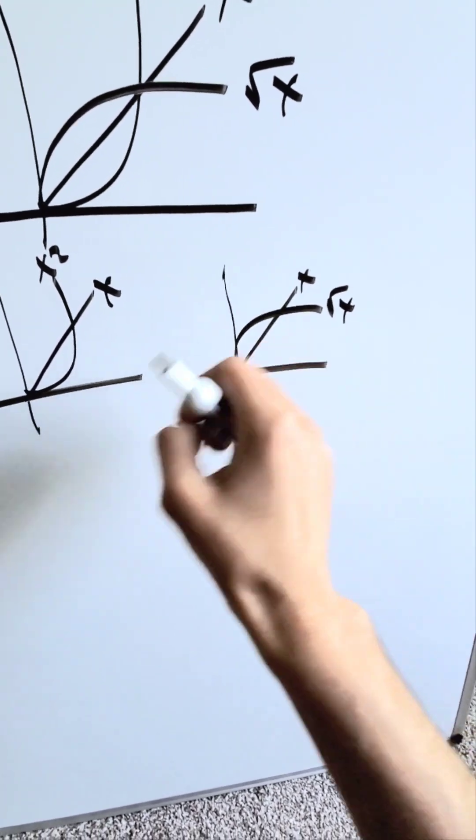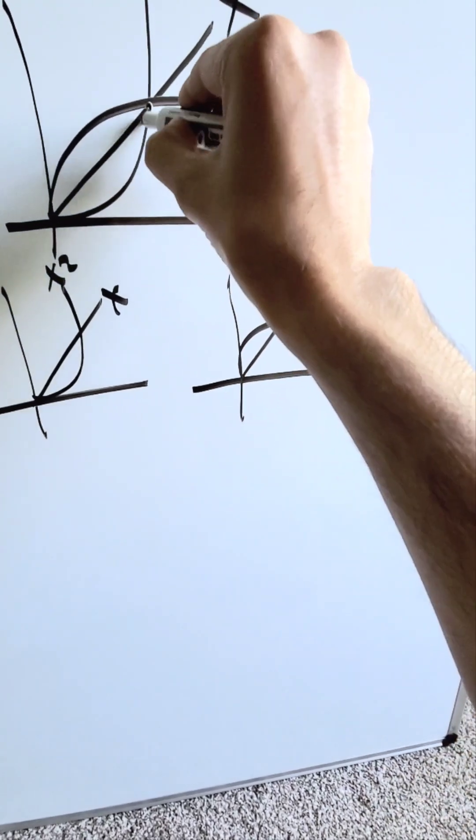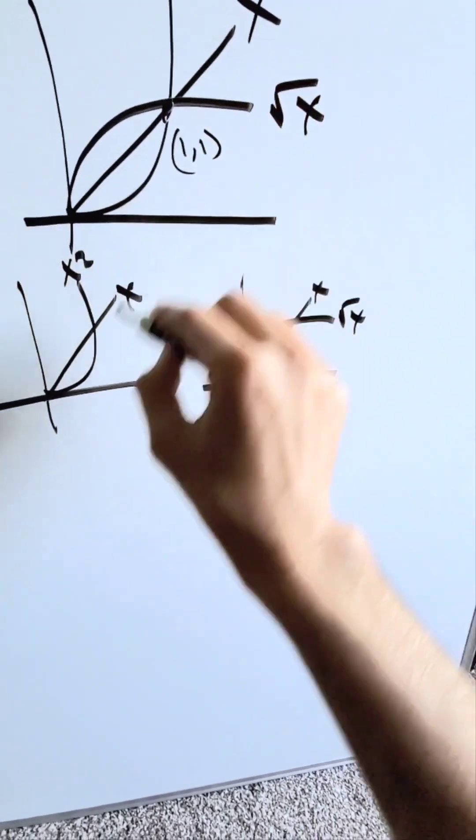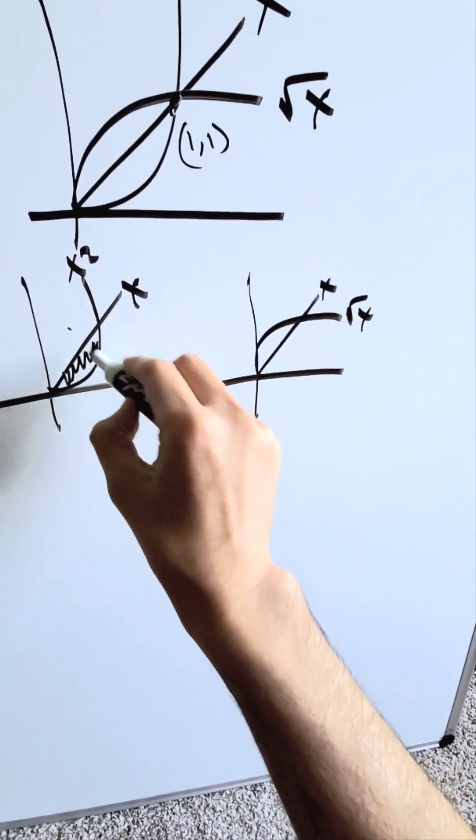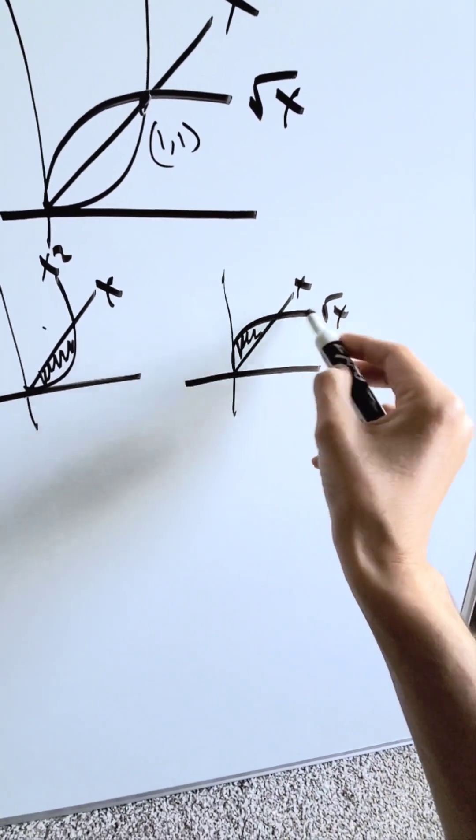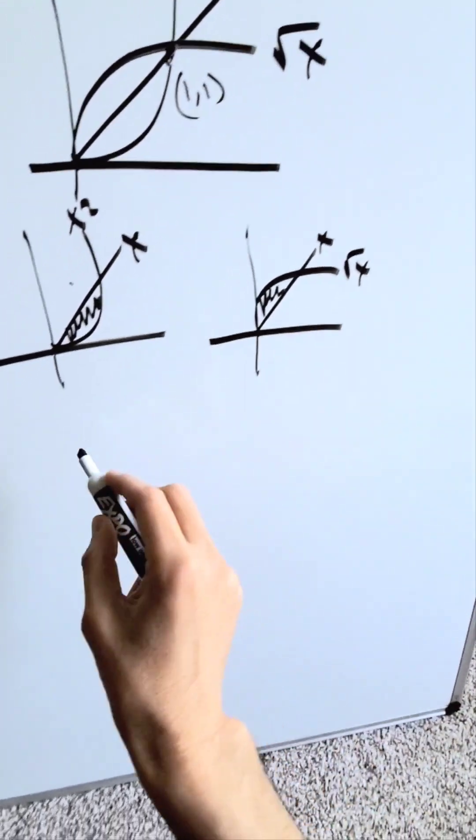Absent any exaggeration in my drawing, this point, the intersection of all three, is always (1, 1). This area between x and x squared and this area between root x and x will be equal to one another.